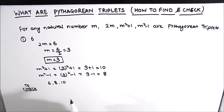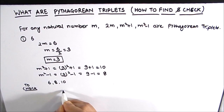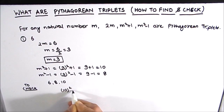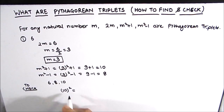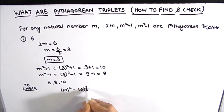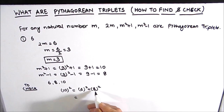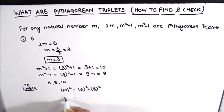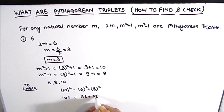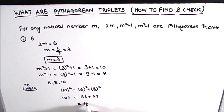To check whether these three numbers are Pythagorean triplets, we take the biggest number, which is 10. The square of the biggest number should equal the sum of the squares of the other two. So: 10² = 100, 6² = 36, and 8² = 64. Since 36 + 64 = 100, this is true.